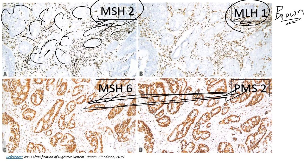So that was a quick review of microsatellite instability. In the next videos, I'll talk about how the pathogenesis of colorectal cancer occurs and the different pathways. Do leave comments on how you found the video, if it was helpful, and please let me know what other material you would like. All the very best.